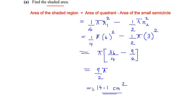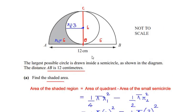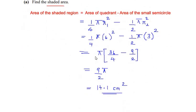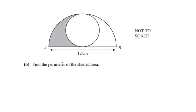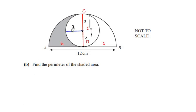This is the area of the shaded region. Now let us look at part B of this question: find the perimeter of the shaded area. In part A we found the area of the shaded region; now here we need to find the perimeter, that is the outline of the given shaded region. Let me again divide the semicircle into two equal quadrants and write the values as in part A.